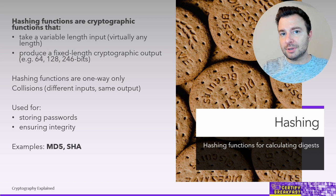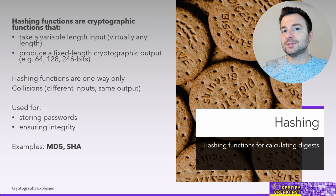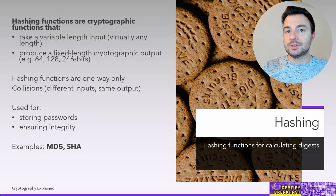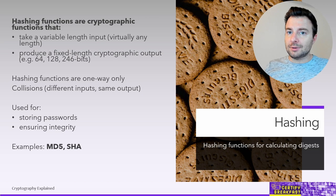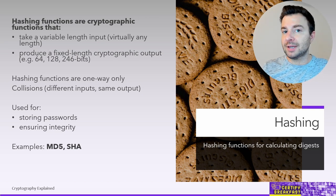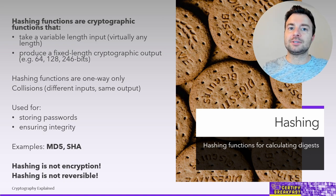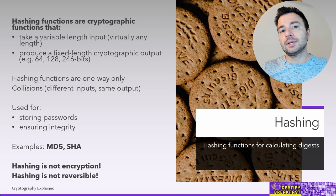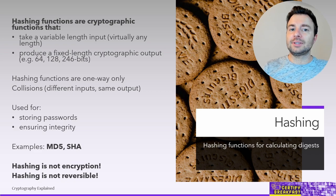Some examples of hashing algorithms: we have MD5 — Message Digest 5 — and SHA, Secure Hash Algorithm. There are multiple versions of SHA, some differing by the length of the output. Remember these two key points: hashing is not encryption, and hashing is not reversible. You cannot obtain the original content just by analyzing the resulting hash.